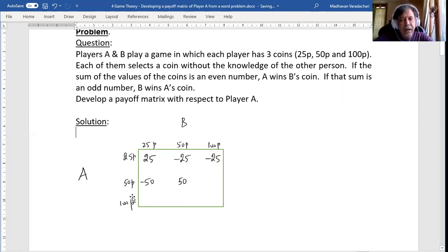150, it is 150. 150 is an even number. Even number means A will receive B's coin. So 100 paise of B will be obtained by A, means you will get it. This will become 100.